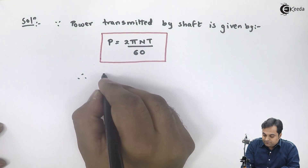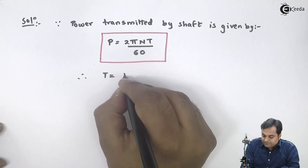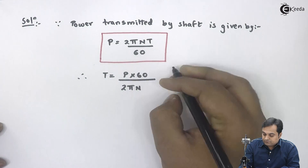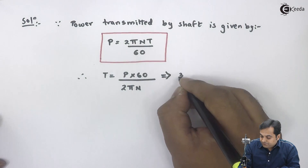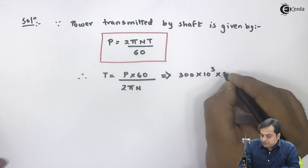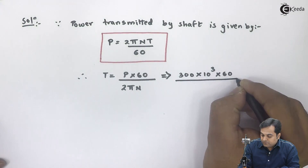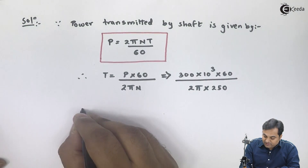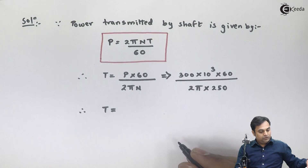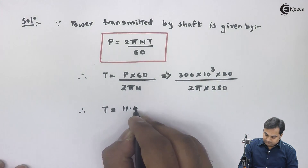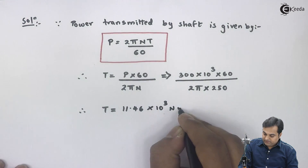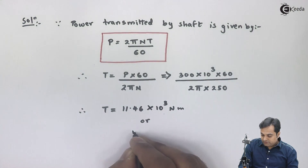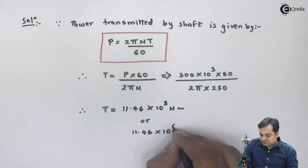Therefore, T = P×60 / (2πN). Substituting P = 300×10³ watts and N = 250 rpm, the value of torque comes out to be 11.46×10³ Newton·meter, which equals 11.46×10⁶ Newton·mm.